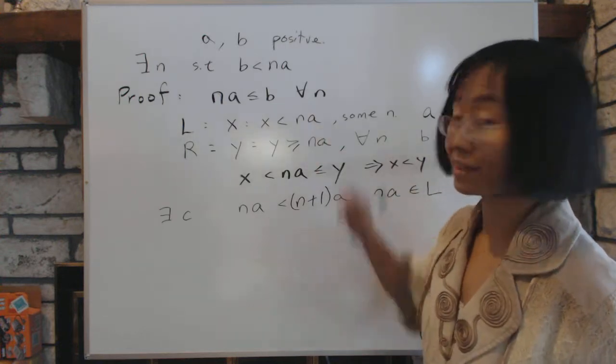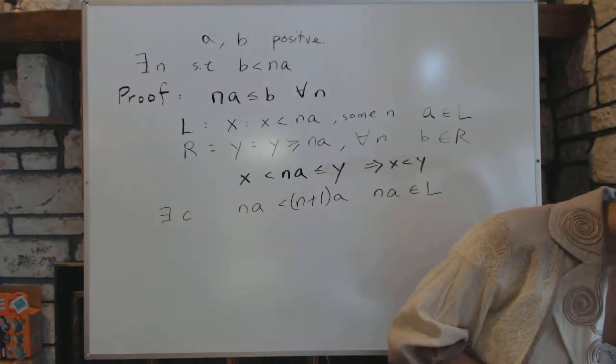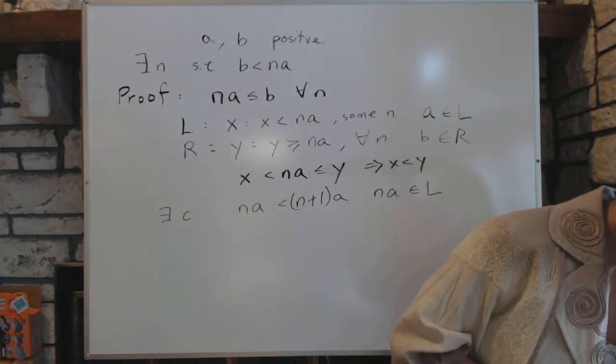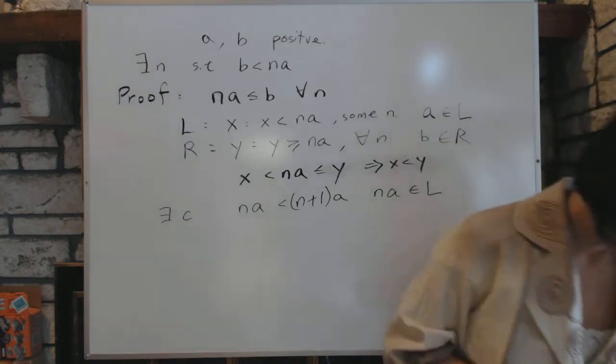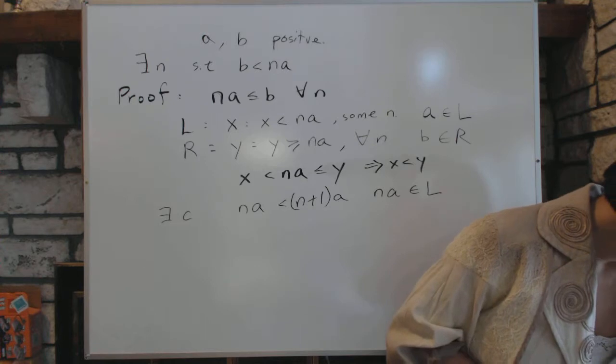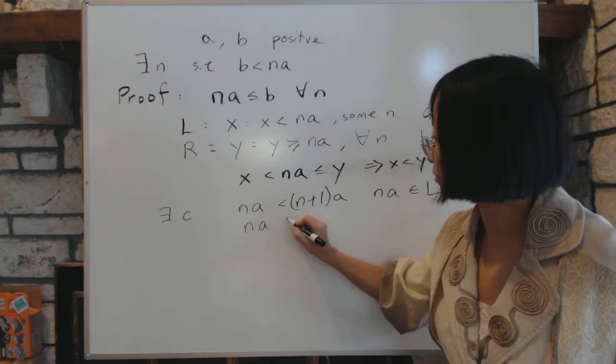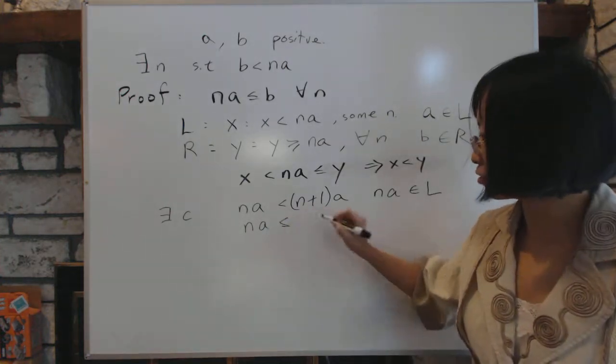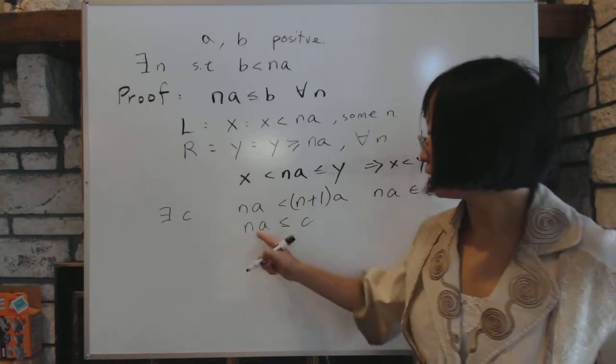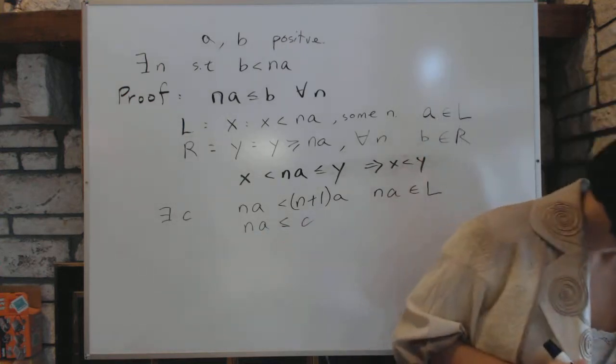And that means NA is in L. And next, therefore, and because it's in L, it has to be, therefore NA is less than C. Less than or equal to C. We don't really care the equal part, but we'll write it down anyway. The point is, it's less than or equal to the cut.